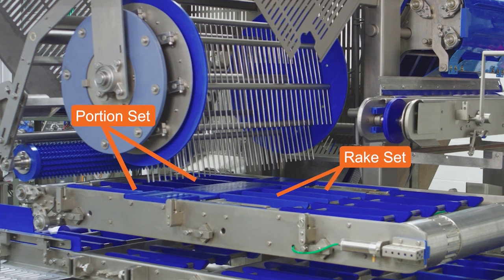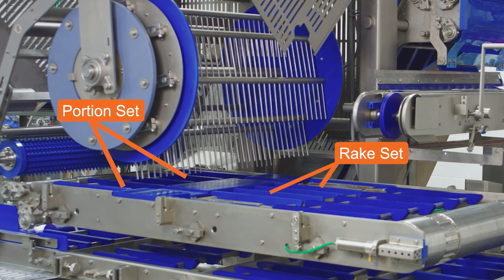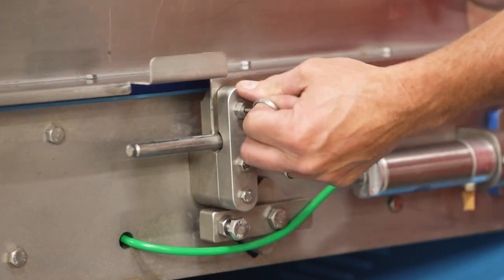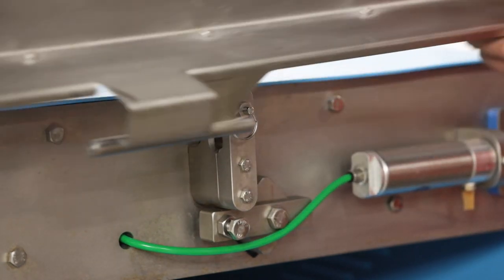No pressure on the weigh scales unless you're running production. The main cover latches on the portion belt conveyor are spring-loaded - make sure they stay spring-loaded.